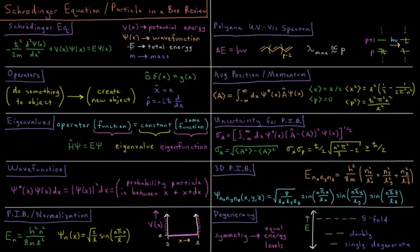And get a total energy, E, for a particle of a given mass, m. So our Schrödinger equation is minus h-bar squared, Planck's constant over 2 pi squared, divided by 2 times the mass times the second derivative of the wave function with respect to position, plus the potential energy times the wave function equals the total energy times the wave function again.